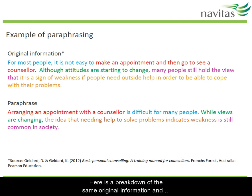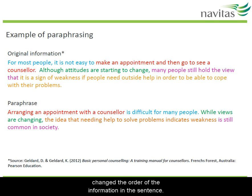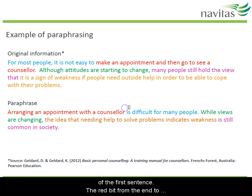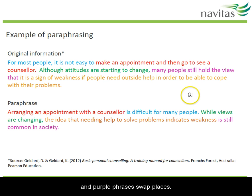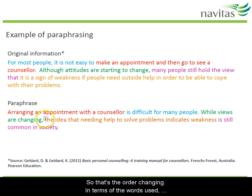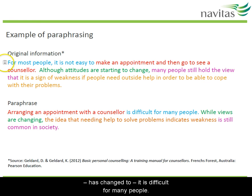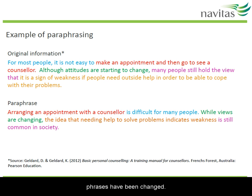Here's a breakdown of the same original information and the paraphrase. You can see how I've changed the order of the information in the sentence. The blue part has moved from the beginning to the end of the first sentence. The red bit from the end to the beginning. In the second sentence, the beginning green part stays where it is, but the orange and purple phrases swap places. In terms of the words used, you can see that 'for most people, it is not easy to make' has changed to 'it is difficult for many people.' Pause the recording to have a good look at how the other phrases have been changed.